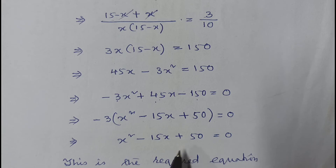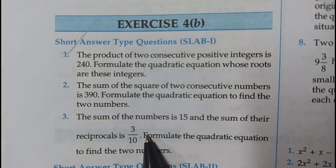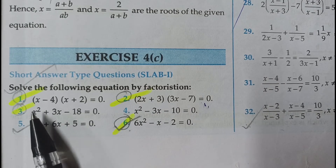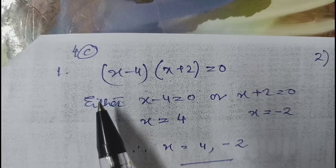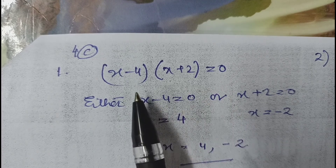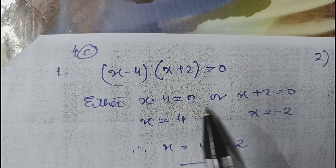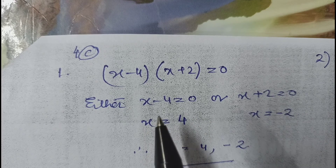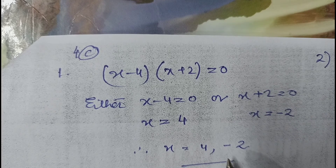Now moving to 4c. The first question says: solve the following equation by factorization. Question 1: (x-4)(x+2) = 0. Since it is already in product form, either x-4 = 0 or x+2 = 0. From the first, x = 4; from the second, x = -2. Therefore x = 4 and x = -2 are the roots of the given equation.